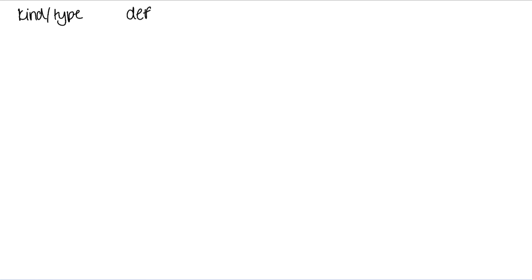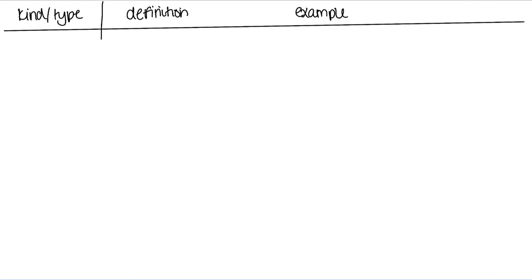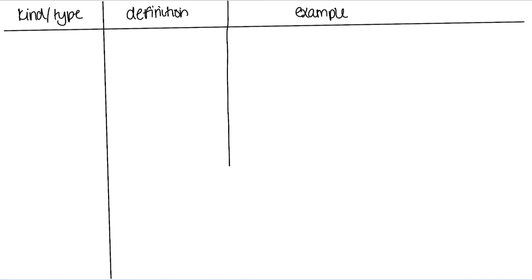We're going to talk about the four types of mutations. We're going to start with a blank page and build a table — we'll have the kind or type, the definition of that mutation, and then an example. If you have not yet pulled out your codon table, I encourage you to go ahead and grab that because we will certainly need it.